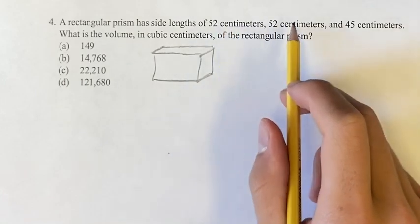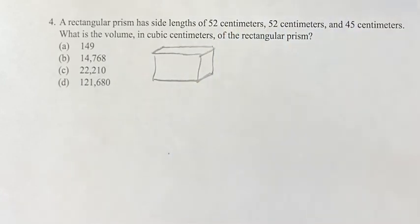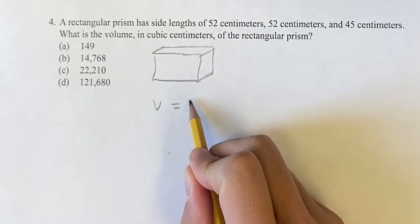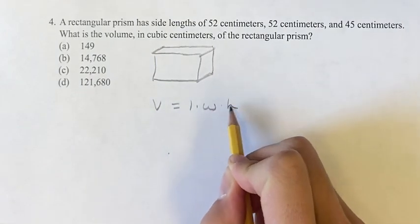So we're given 52, 52, and 45. And we're not actually told which one's the length, the width, or the height because it doesn't really matter. The volume of this rectangular prism is just going to be the length times the width times the height.